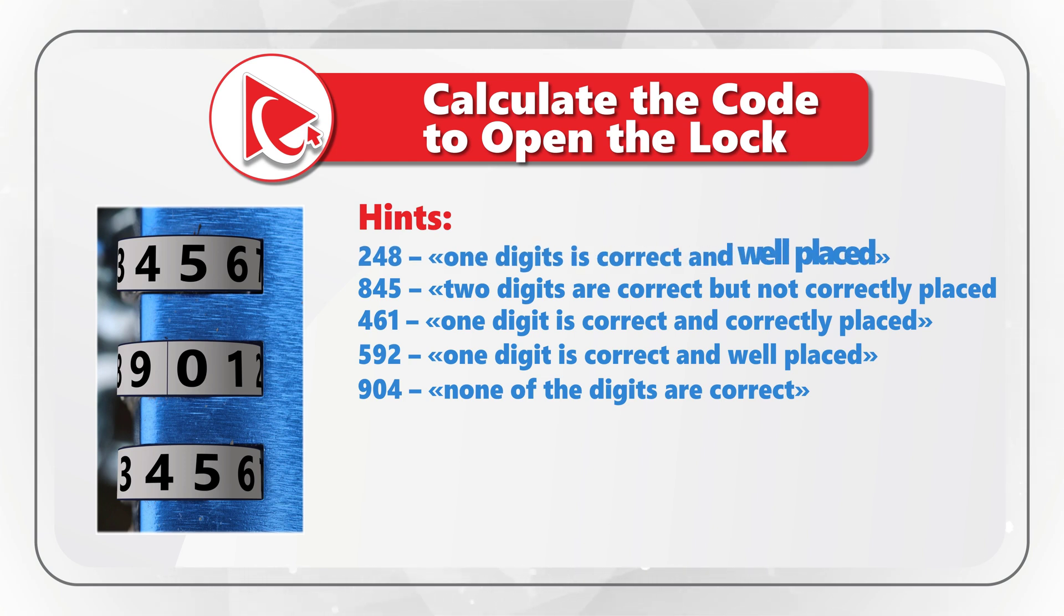In the digits 248, only one digit is correct and well placed. In the digits 845, two digits are correct but not correctly placed. In the digits 461, only one digit is correct and it is correctly placed. In the digits 592, only one digit is correct and it is well placed.